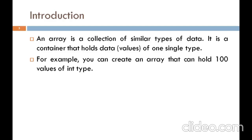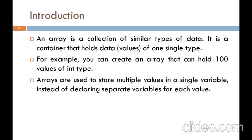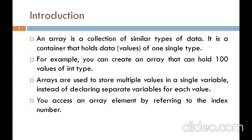We have already used arrays in C and C++, so we are familiar with them and have performed a lot of programs there. An array is a special type of data structure where we store similar elements. We can store only a fixed set of elements in a Java array. Arrays are used to store multiple values in a single variable instead of declaring a separate variable for each value. We can access an array element by referring to the index number.